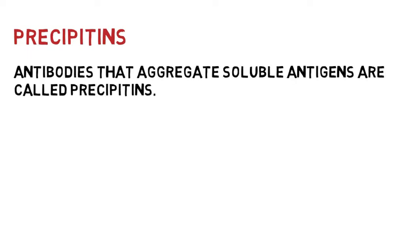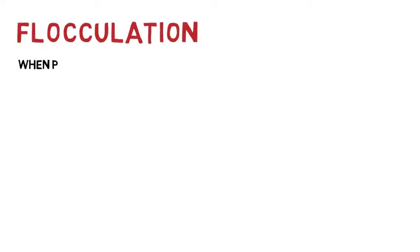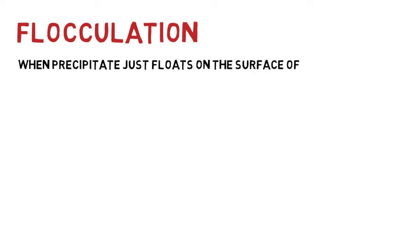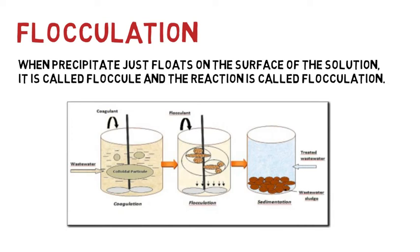As the size of the antigen-antibody lattice increases, it loses its solubility and precipitates out of solution and becomes visible. When the precipitate floats on the surface of solution, it is called floc and the reaction is called flocculation.